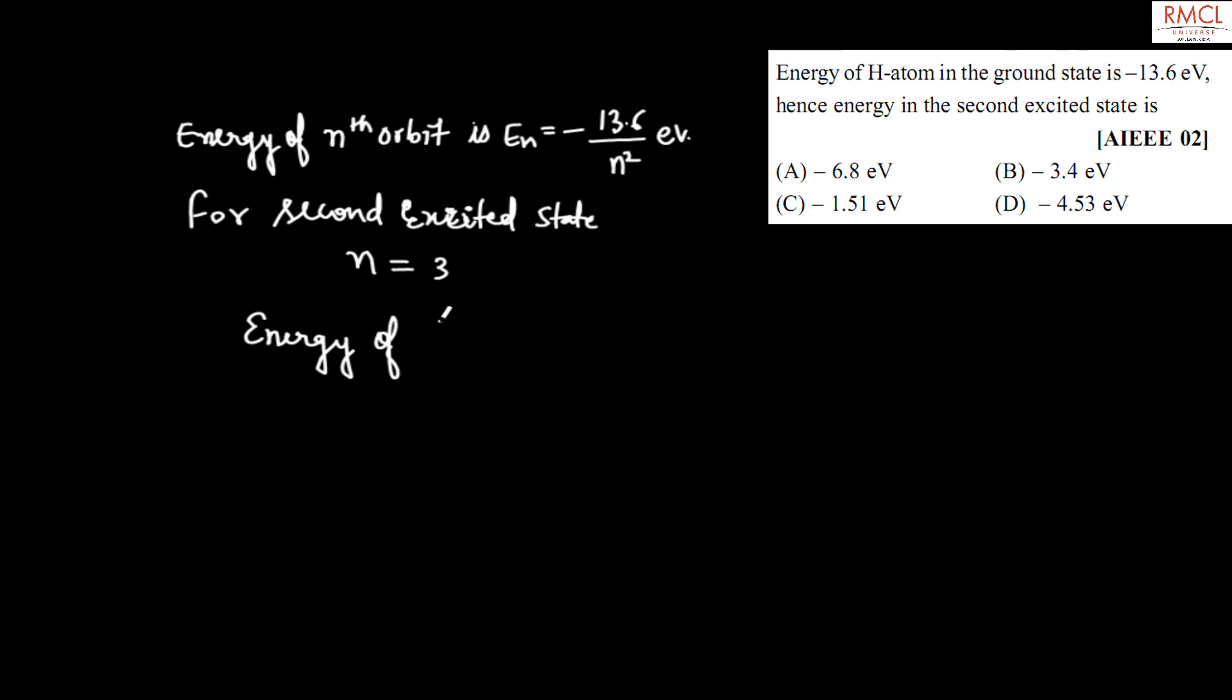E_3 is equal to minus 13.6 upon 3 square, which equals minus 13.6 upon 9. When it is solved, the answer obtained is minus 1.51 electron volt. Hence this answer will be minus 1.51 electron volt.